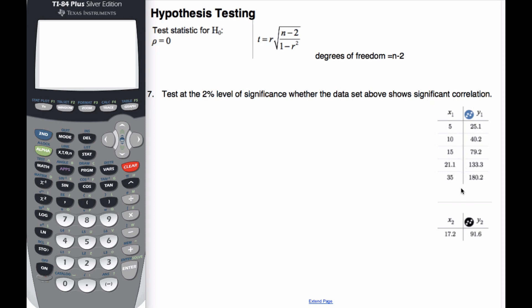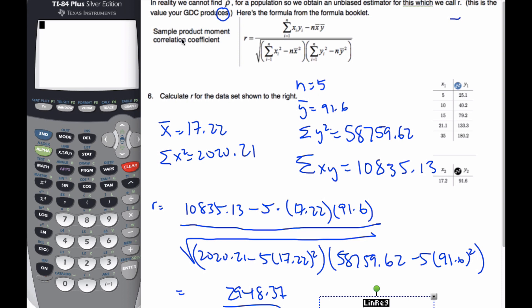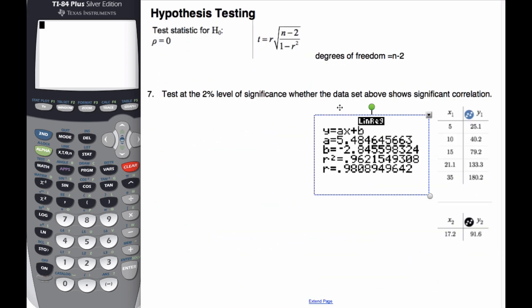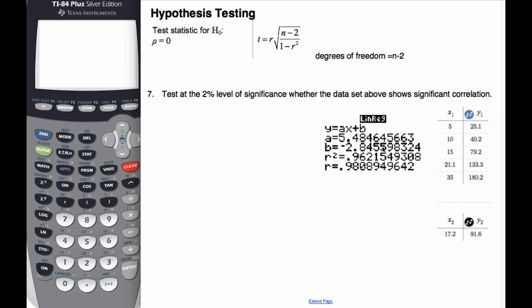We're going to test at the 2% level of significance whether the data set shows significant correlation. This particular data set we had done previous work on. You'll remember we had calculated our correlation coefficient as such, and we can see here are our values.